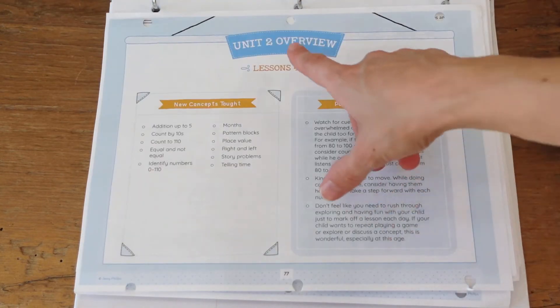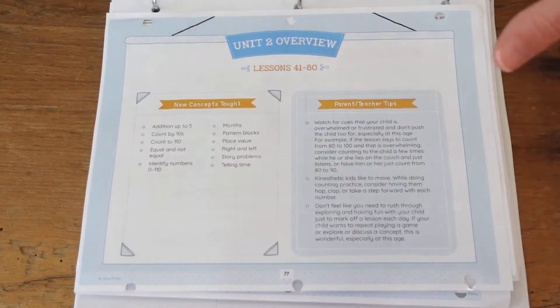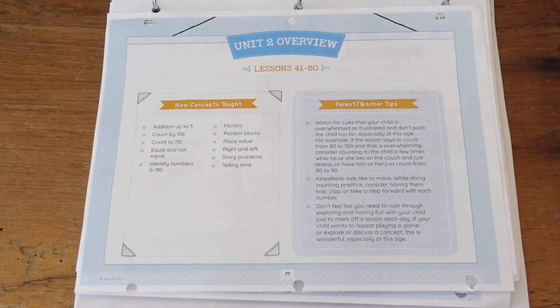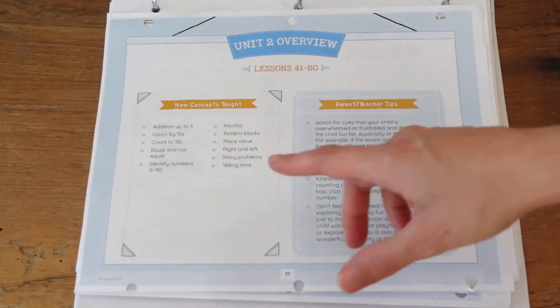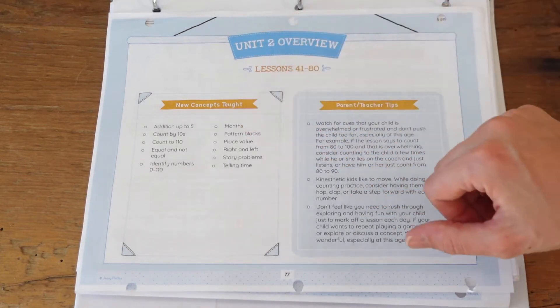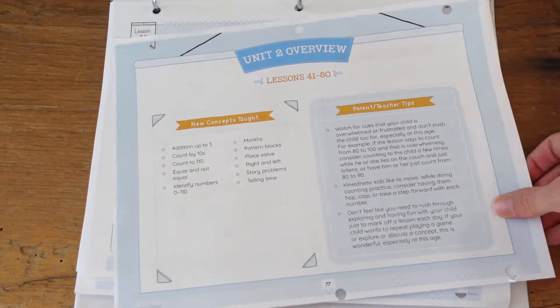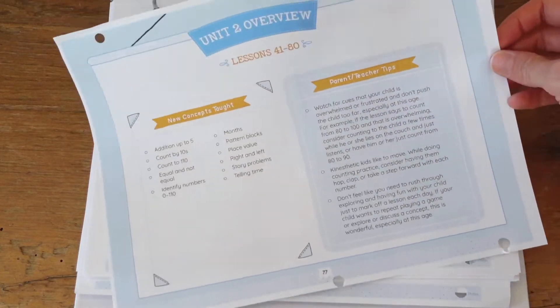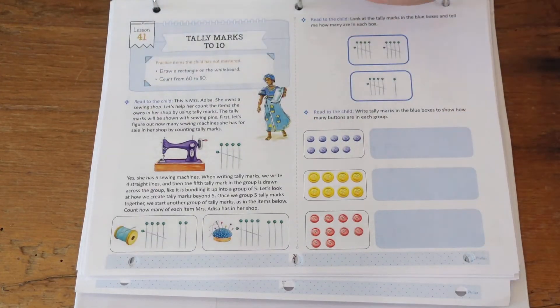And then now we're ready for the unit two overview. For unit two your student will do addition up to five, count by tens, count to a hundred, what is equal and not equal, and identifying numbers zero through 110. They're going to go through months and then different place value and everything like that, so that's unit two.